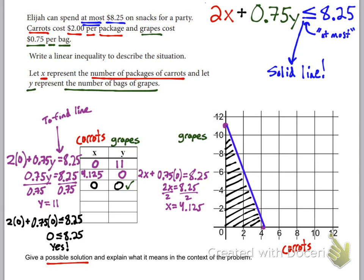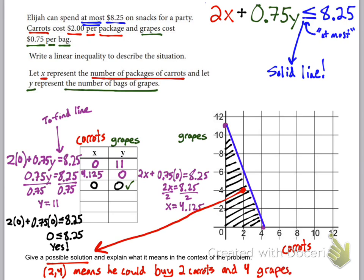Now, this last thing is asking us to give a possible solution and explain what it means in the context of the problem. So, whenever it looks for a possible solution or a reasonable solution, just pick a point somewhere that's in the shaded area. I'm going to pick that point right there, (2, 4). Well, what does that mean? (2, 4) means that Elijah can buy 2 carrots and 4 grapes. I really mean 2 packages of carrots and 4 bags of grapes. But, you know what I mean. So, (2, 4) means he could buy that. And you could do the math and check. 2 carrots would only be $4. 4 grapes, 4 times 0.75, would only be $3. So, that would only cost $7 total. So, he could buy 2 carrots and 4 grapes. In fact, he could buy any of the points in that shaded area and he wouldn't spend too much money.